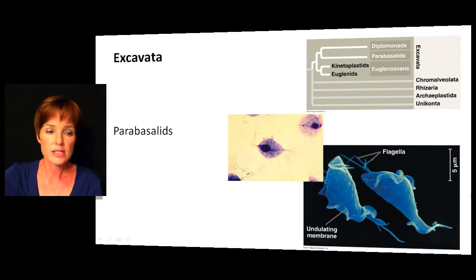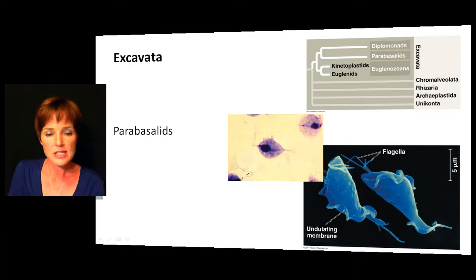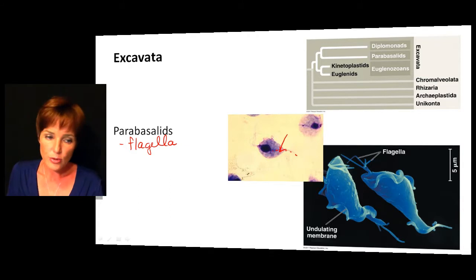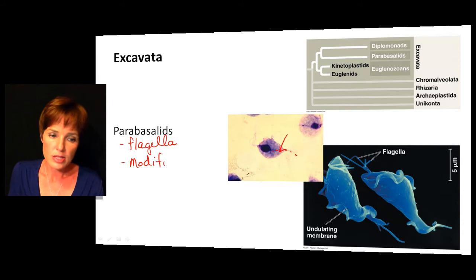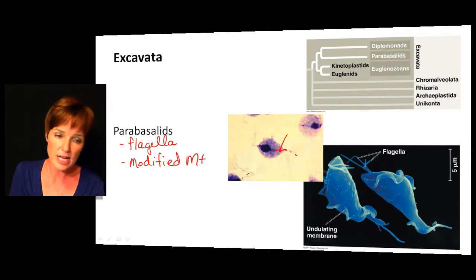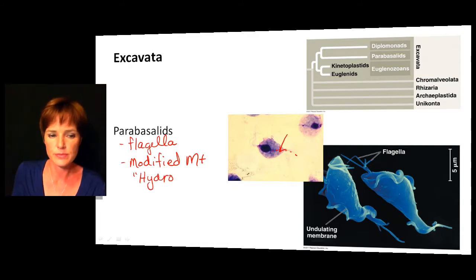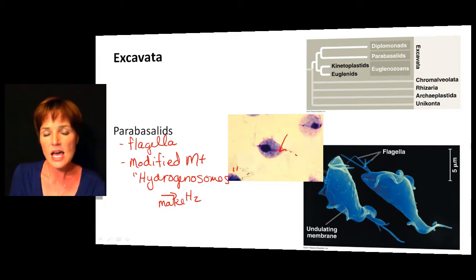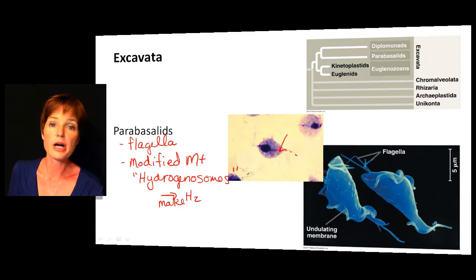Moving on to the parabasalids: we can see that deep running groove in this one. They do have multiple flagella as seen in the pictures. They also have modified mitochondria, but these have a different name from the diplomonads — these are called hydrogenosomes. They're called hydrogenosomes because these produce hydrogen gas (H₂) as a byproduct, which is fairly unique when talking about mitochondria and the products they produce.